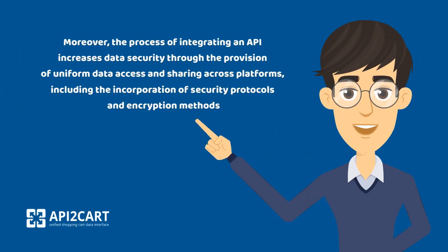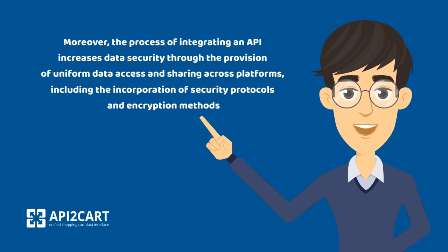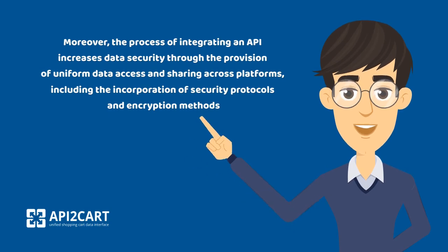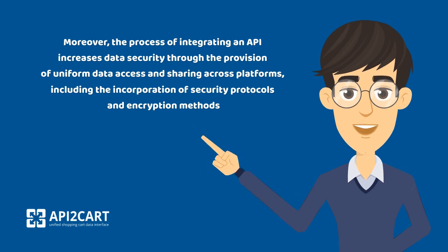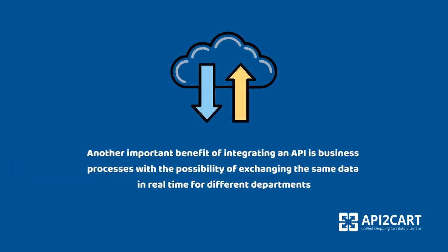Moreover, the process of integrating an API increases data security through the provision of uniform data access and sharing across platforms, including the incorporation of security protocols and encryption methods. Another important benefit is enabling business processes with the possibility of exchanging the same data in real time for different departments.